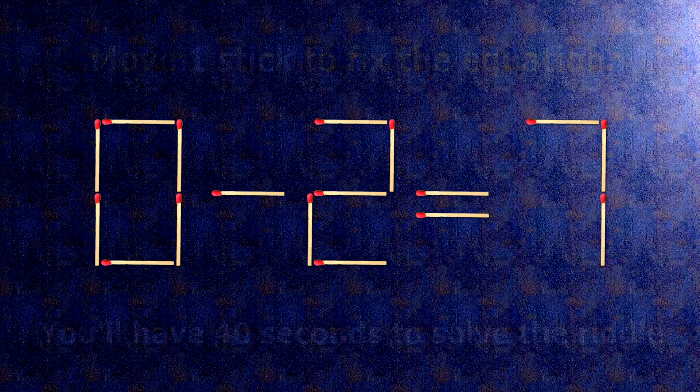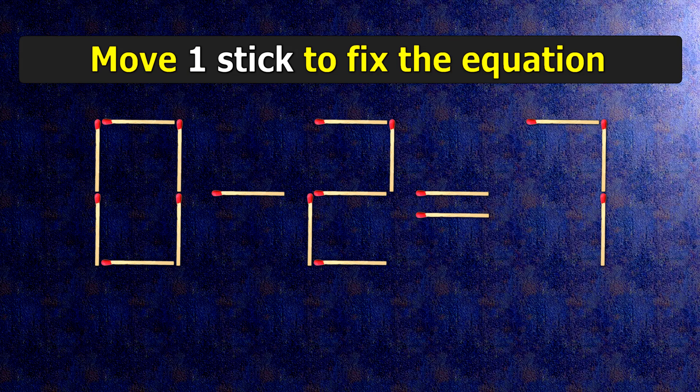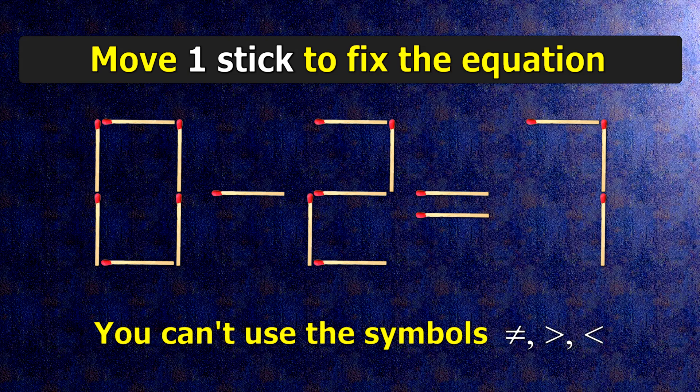We have the equality 0 minus 2 equals 7. Our equality is wrong. We need to move one match to make our equality correct.